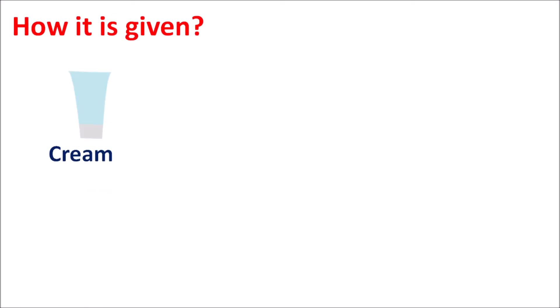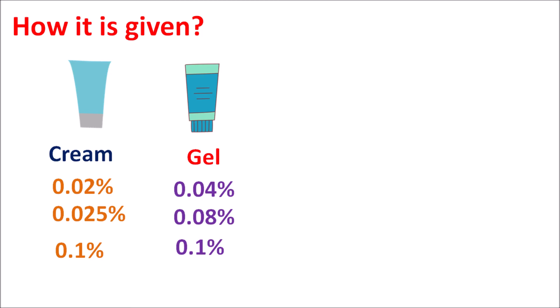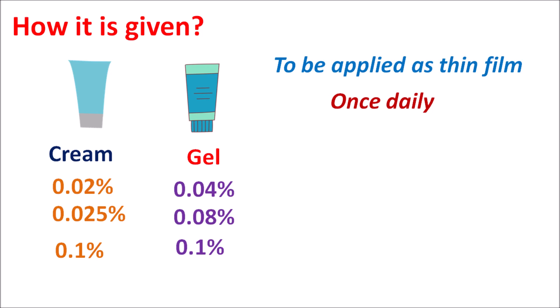Tretinoin is available as a cream as well as a gel, at different strengths. As a cream, it is available from 0.02%, 0.025%, up to 0.1%. As a gel, it is available at 0.04%, 0.08%, and 0.1%. Either cream or gel should be applied as a thin film once daily before bedtime in order to minimize skin irritation. Before application, the local area should be thoroughly washed and dried, but not scrubbed, to avoid unnecessary skin irritation.